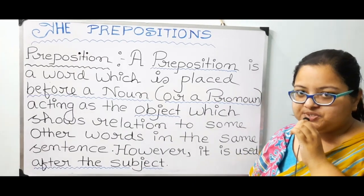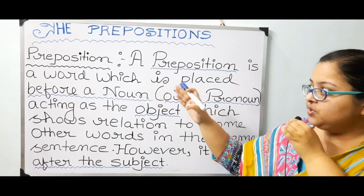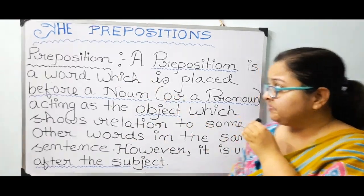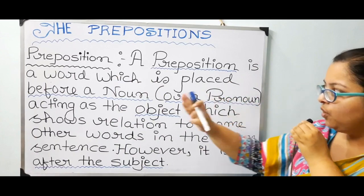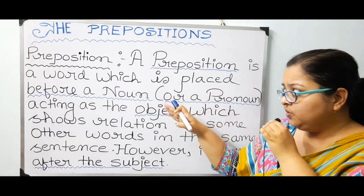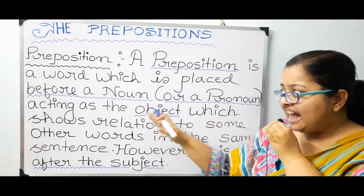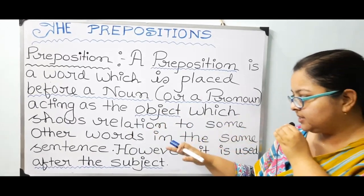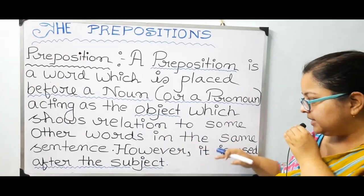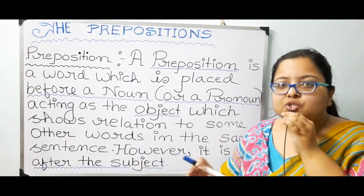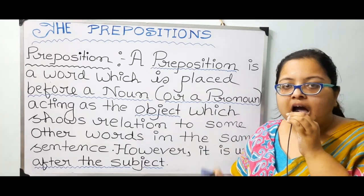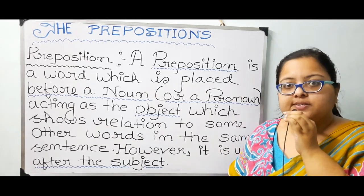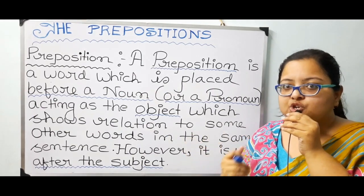Let's start prepositions today. Let's see first the definition of a preposition. A preposition is a word which is placed before a noun or a pronoun acting as the object, which shows relation to some other words in the same sentence. A preposition is basically a word which forms a connection with some other words, or establishes a relationship among words.